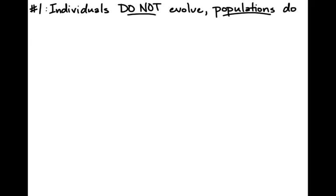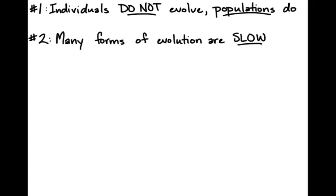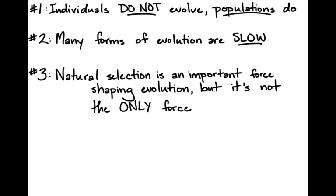Big point number two is that there are many forms of evolution that we'll discuss that happen slowly over huge periods of time. And finally, number three is that while natural selection is incredibly important and was the first driving force of evolution discussed by the scientific community — not only by Charles Darwin, but lots of other scientists — there are a lot of other forces changing and shaping populations as they evolve, just as there are a number of ways we're going to track these changes. There's a lot more going on here than meets the eye — lots of cool science at play when we're talking about evolution.